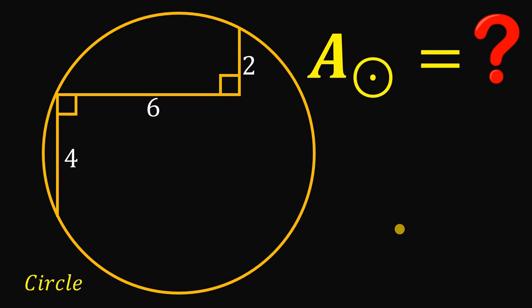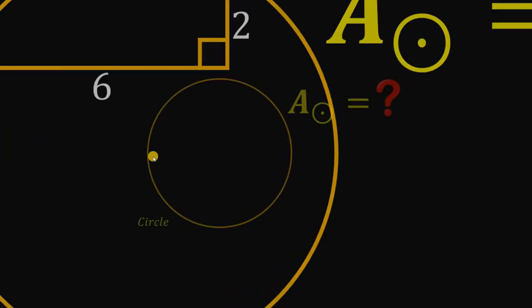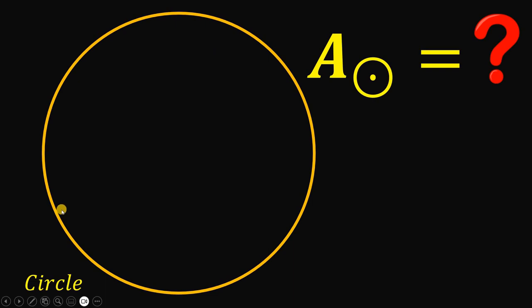Can you solve this geometry challenge? Here's the question. Given the circle, let's draw a chord like this with a length of 4 units.